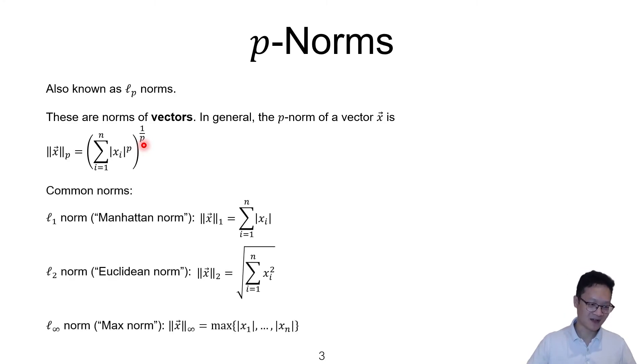Maybe it looks a bit mysterious, but I think many of you have seen something similar. The common norms may look more familiar to you guys. So the l1-norm is given, so sometimes it's just called the 1-norm or Manhattan-norm. It's just the sum of the absolute values of all the components.